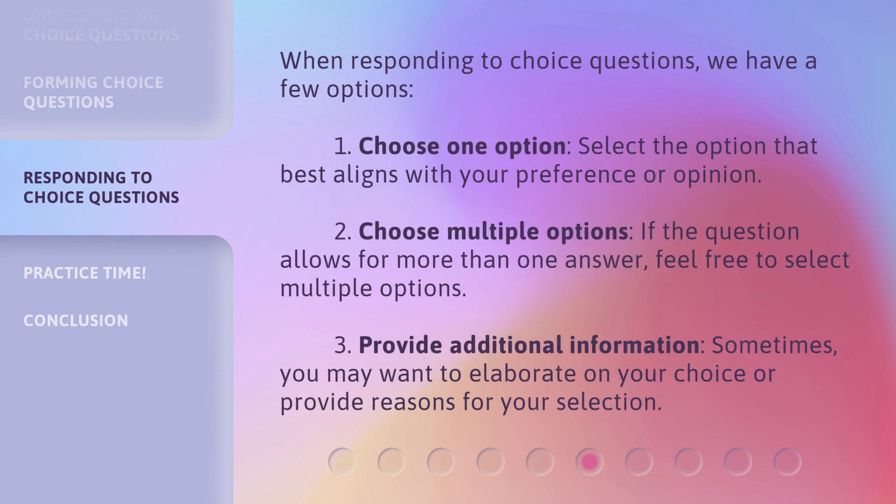When responding to choice questions, we have a few options. First, choose one option — select the option that best aligns with your preference or opinion. Second, choose multiple options — if the question allows for more than one answer, feel free to select multiple options. Third, provide additional information — sometimes you may want to elaborate on your choice or provide reasons for your selection.